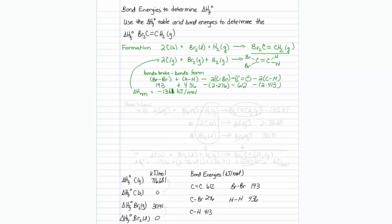The next application is to use Hess's law to get to the reactions that we want. So I will rewrite what I had above. I know that the reaction of two carbons in the gas phase plus bromine in the gas phase plus hydrogen in the gas phase gives me Br2C double bond CH2 in the gas phase, and I've calculated that amount to be minus 1316 kilojoules.